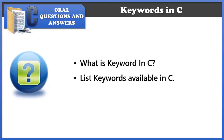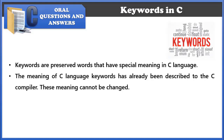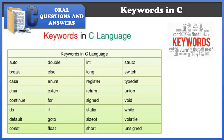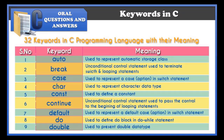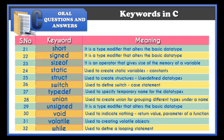What are keywords in C? Keywords are reserved words that have special meaning in C language. These keywords have already been defined to the C compiler, and their meaning cannot be changed. Keywords cannot be used as variable names because their meaning could be altered during execution, which is not allowed. There are a total of 32 keywords available in C language.